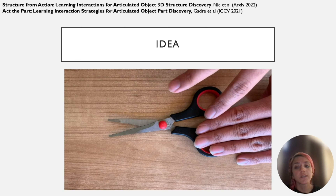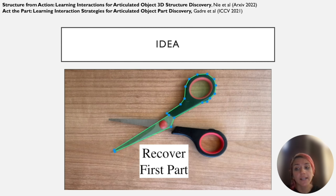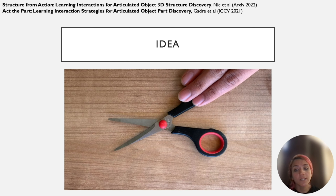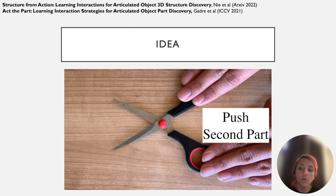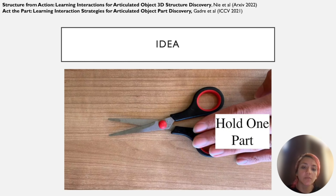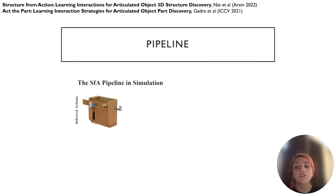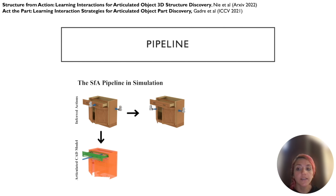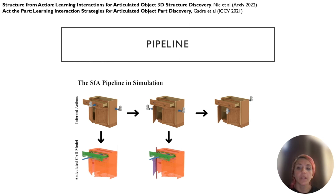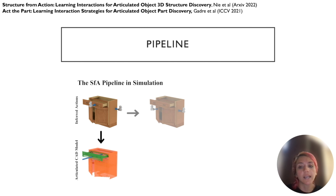Acquiring supervised data for articulation learning is a very challenging task. Our approach instead is to intelligently interact with an object to identify its parts and joints in a self-supervised manner. By stabilizing one part of the object and initiating movement in the other, we induce meaningful articulation that results in discovering the parts of the object. Our goal is to infer informative multi-step interactions given an articulated object and generate the articulated 3D CAD model of the object over time, by first inferring the push-and-hold action and then inferring the parts reconstruction and joint parameters.